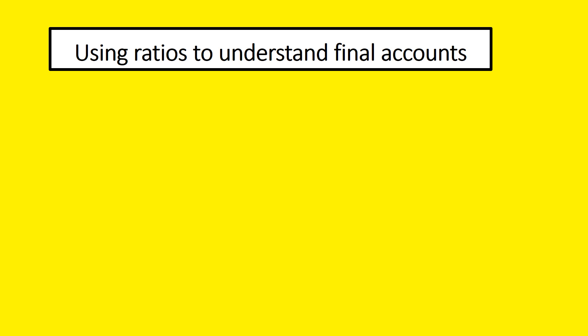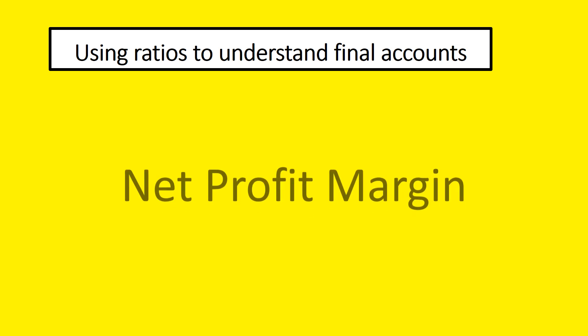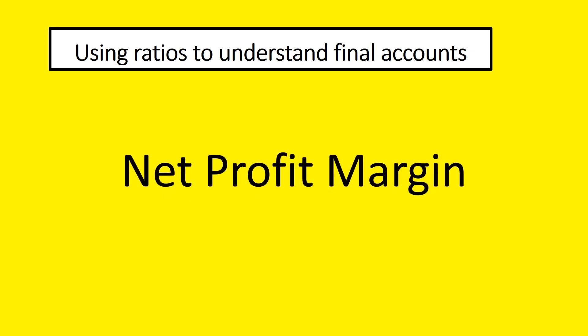This is the second video in which we're going to be looking at how to use ratios to understand final accounts. Today we're going to be looking at net profit margin. If I have a pound from a company, how much of it goes on costs and how much of it goes as net profit? So if I spend a pound at Boots, 90% of the money goes on costs, 10% of the money goes on profit.